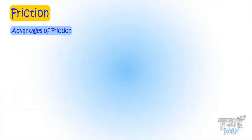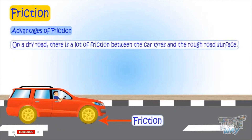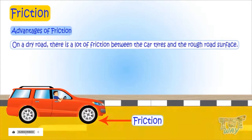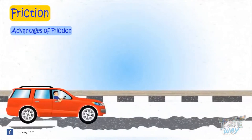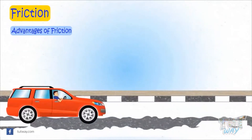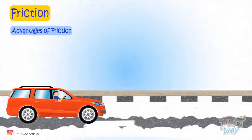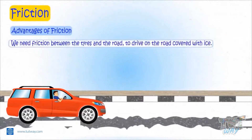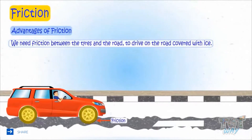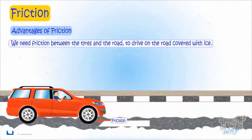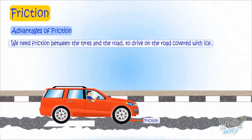On a dry road there is a lot of friction between the car tires and the rough road surface. But in winters there is snow or ice on the road, which makes the surface very smooth, and there is little friction between the tires and the road, because of which the tires may slip off the road.